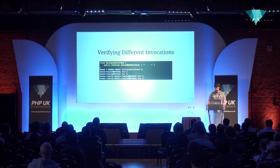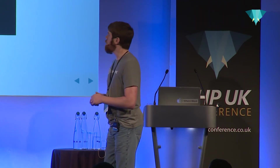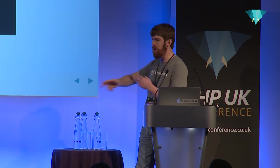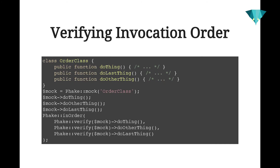To verify that methods are executed in a specific order — say in an e-commerce project where you need to validate a credit card, send off orders to fulfillment, and send an email in a certain order — Fake has an inOrder method. You wrap all your verify calls inside this method. Fake will verify that doThing was called, at some point thereafter doOtherThing was called, and at some point thereafter doLastThing was called. It doesn't care about any calls in between — just that these calls happen in this order in relation to each other.